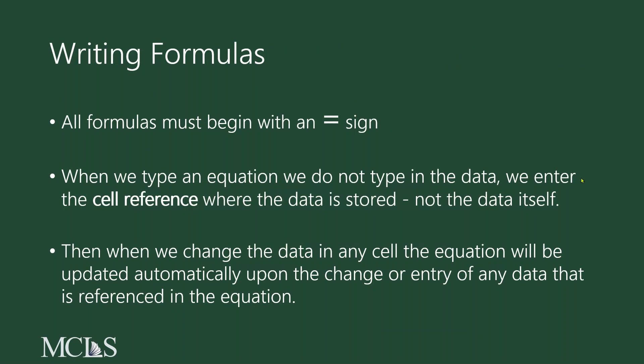All formulas must begin with an equal sign — always. As you get more experience, you can build formulas yourself just by typing them in, or you can let Excel build the majority of it for you. But in either case, any and all formulas begin with the equal sign. When we type in a formula, we do not type in the data — we enter the cell reference where the data is stored. Then when we change the data in any cell, the equation will be updated automatically upon the change of any data that is referenced in the equation.